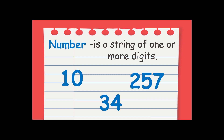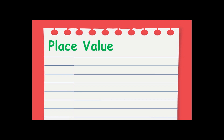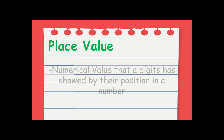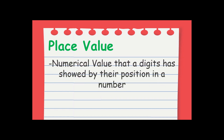So that is the difference between digit and number. When we say digit, it is a single symbol. When we say number, it is 1 or more digits combined. Now let's focus on what we are studying today. What does the term place value mean? When we say place value, it is the numerical value that a digit has shown by its position in a number — the position of a certain digit in a number. That is its place value.